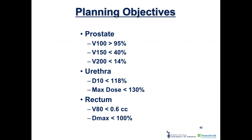Our planning objectives: V100 over 95% — achieved nearly all the time — V150 usually in the 30s, V200 less than 14%. Urethral D10 under 118% and maximum dose less than 130% of prescription, based on prospective trials correlating urethral dosimetric parameters with patient-reported outcomes and toxicity. Rectal toxicity is extremely rare, so we haven't been able to identify a hard rectal dose cutoff. We keep it as low as possible, with rectal V80 typically under 0.1 cc and maximum rectal dose always less than 100%.